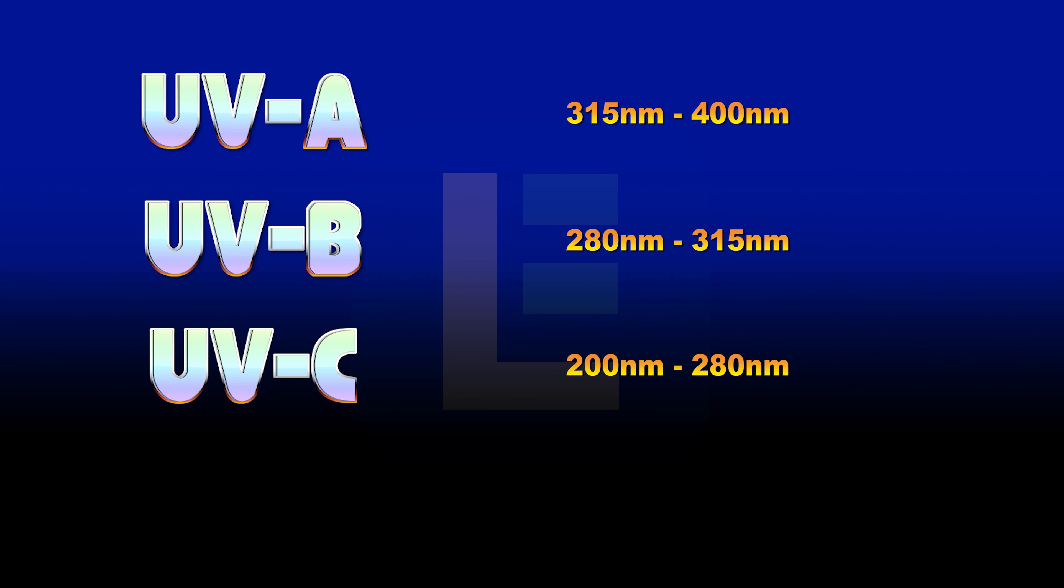And finally, UVV or vacuum ultraviolet is found between wavelength ranges of 100 nanometers to 200 nanometers.